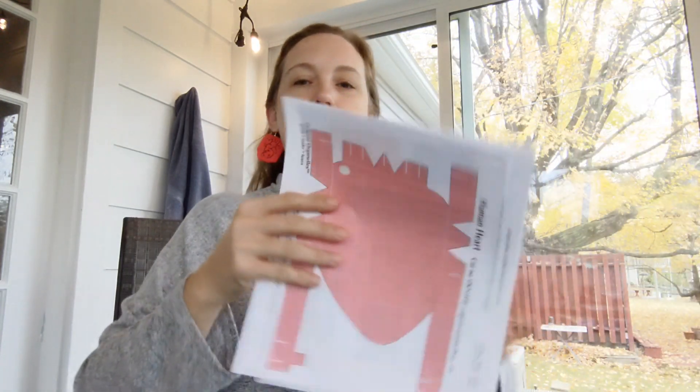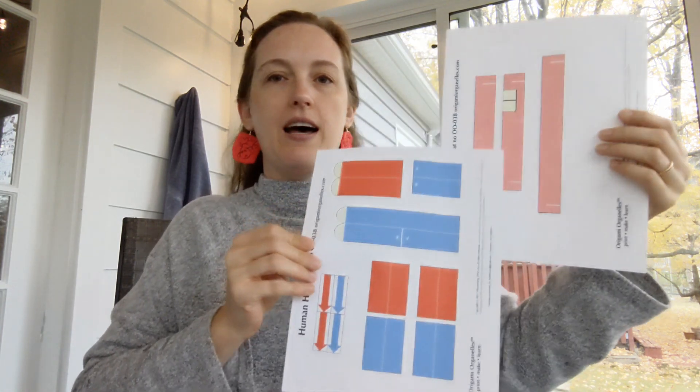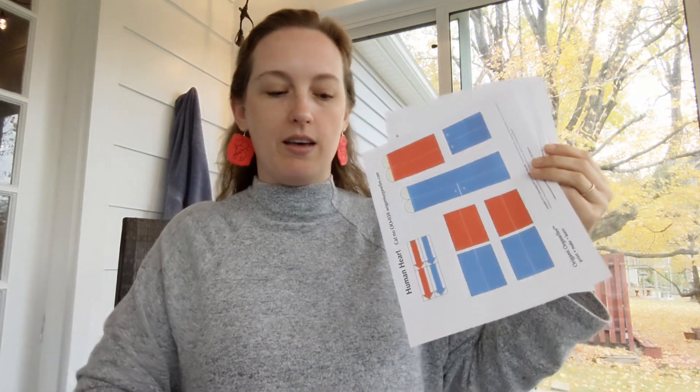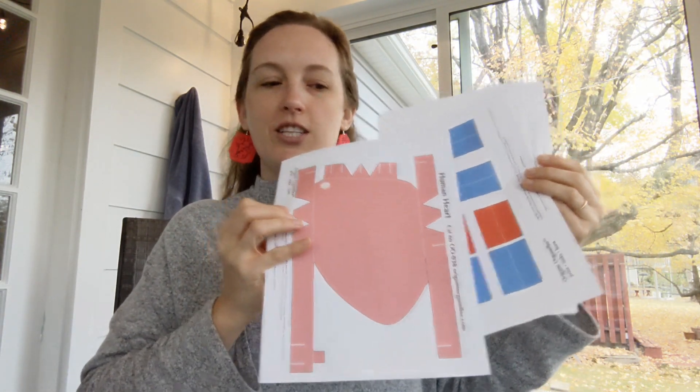Here's what you are going to need. You'll need the three pages of template. These might have been printed on a color printer or maybe you print them on black and white and then you can color them in. So both options come with the origami organelles human heart. You're also going to need scissors and tape and some kind of pen to mark up the heart as you build it.